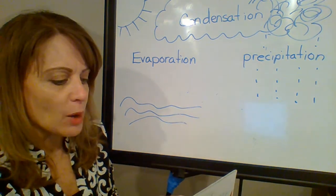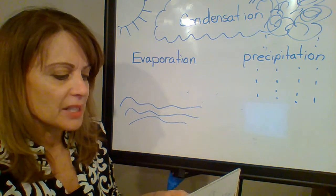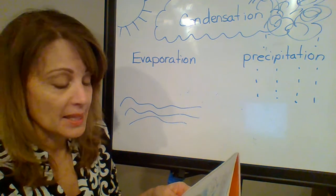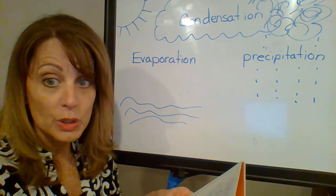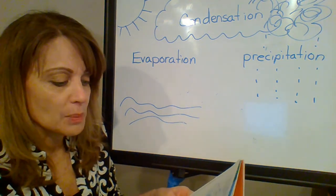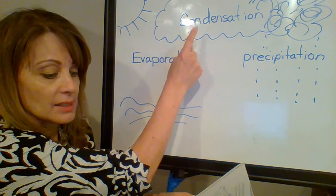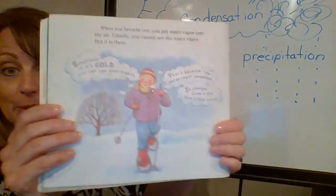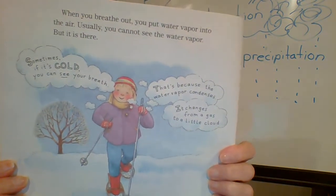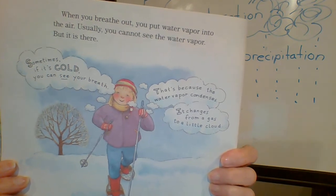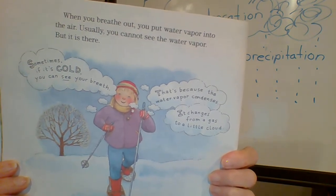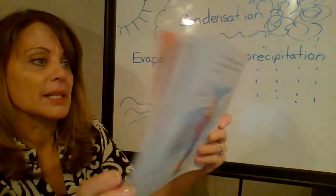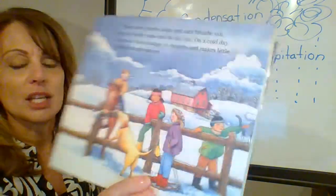When you breathe out, you put water vapor into the air. Usually you cannot see the water vapor, but it is there. Sometimes, if it's cold, you can see your breath. That's because the water vapor condenses — it changes from a gas to a little cloud. Your breath is a cloud. When cows, horses, dogs, and cats breathe out, they put water vapor into the air too. On a cold day, the water vapor changes to droplets and makes little clouds that you can see.